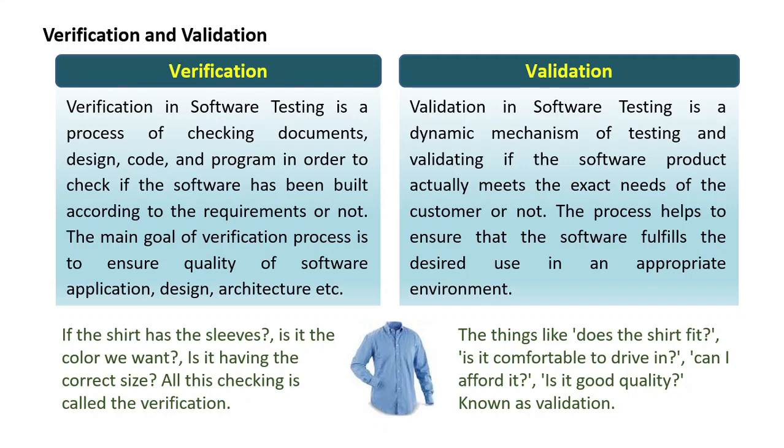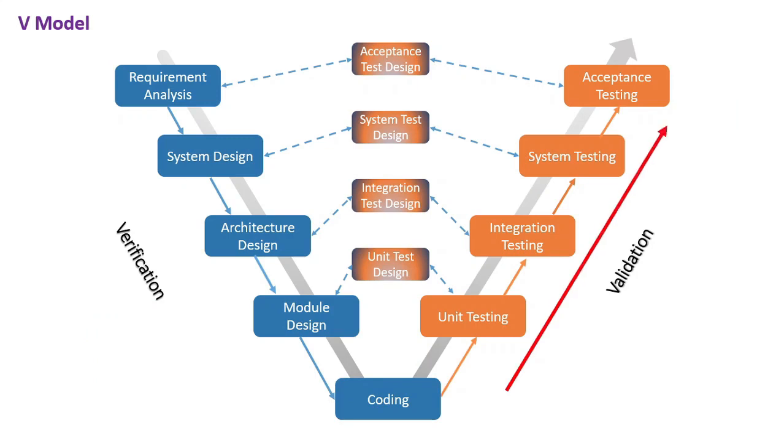The V-Model provides means of testing software at each stage in reverse manner. At every stage, test plans and test cases are created to verify and validate the product according to the requirement of that stage. For example, in the requirement gathering stage, the test team prepares all the test cases in correspondence to the requirement. Later, when the product is developed and is ready for testing, test cases of this stage verify the software against its validity towards requirements at this stage. This makes both verification and validation go in parallel. This model is known as verification and validation model.